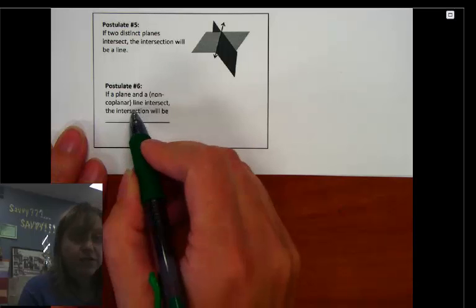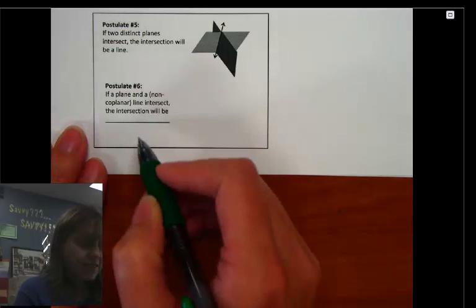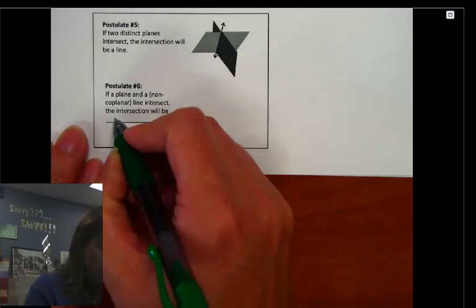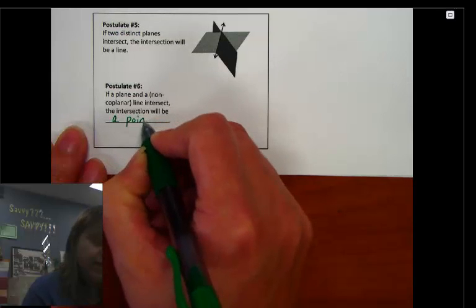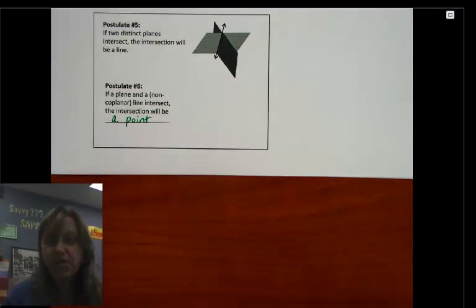So if a plane and a non-coplanar line intersect, then that intersection will be a point. And I want you to try to draw that. Why don't you pause the video and give it a try on your paper, and then start the video again, and you can compare your picture to mine.